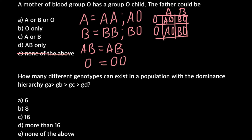Now we build the Punnett square and can predict what genotypes the child might have. If the mother is phenotypically O and the father's genotype is AB, only two variants are possible: the children can belong to blood group A or blood group B. So we can cross out this answer.